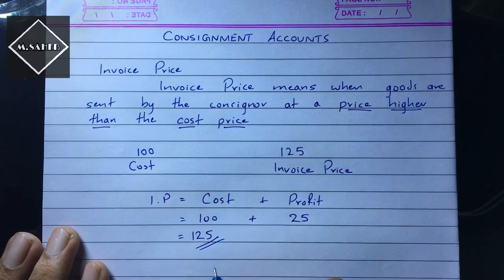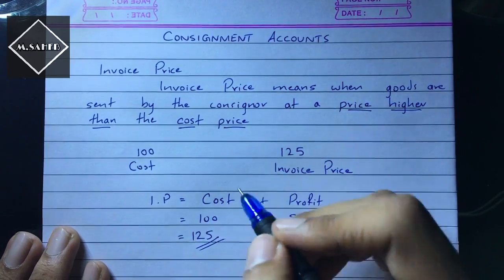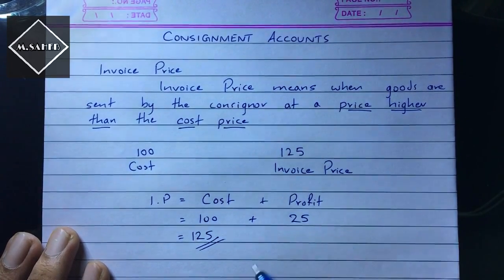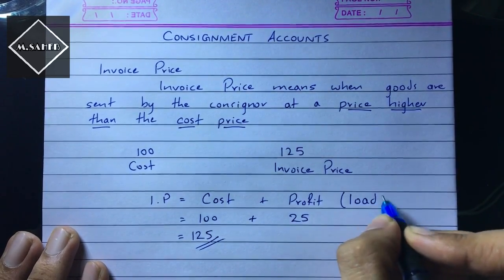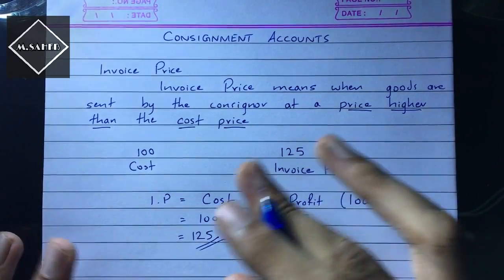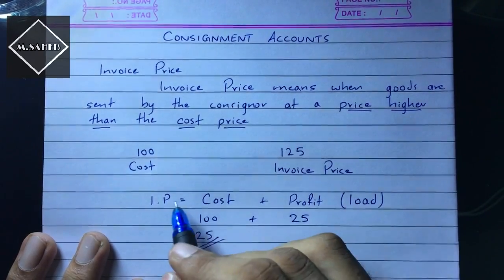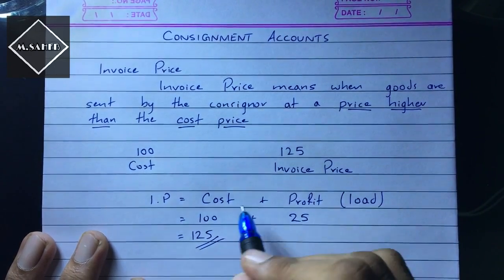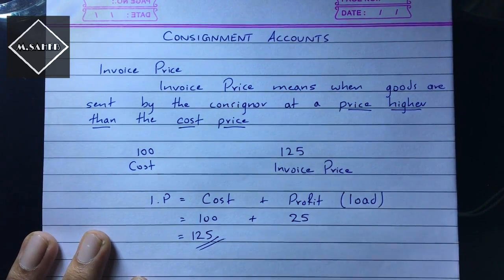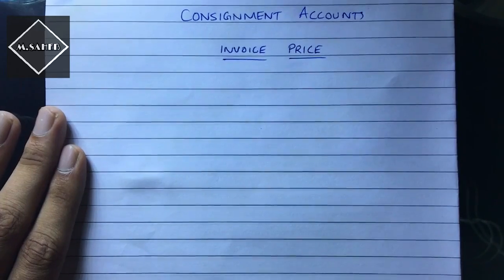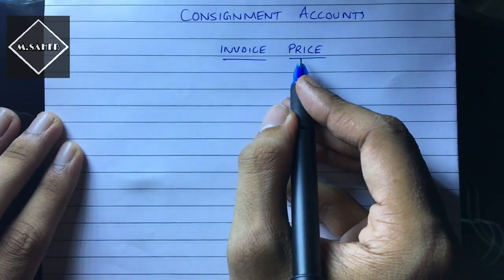Invoice price is also called the loaded price, because it is loaded with profit. So we call this load an extra which is loaded onto the cost price — that's why the invoice price is also called the loaded price.